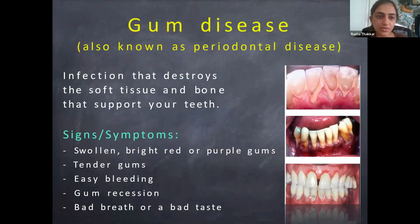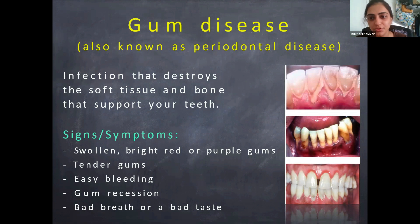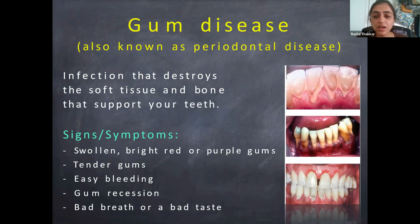Gum disease, also known as periodontal disease, is an infection that destroys soft tissue and bone. When you have this disease, you may see swollen, bright red, or purple gums; tender gums; bleeding that happens easily while brushing; gum recession — where the soft tissue level goes down and you can see the roots of your teeth; and bad breath or bad taste.